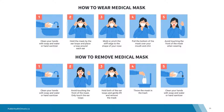How to wear the medical mask: clean your hands with soap and water or hand sanitizer. Hold the mask by the ear loops and place a loop around each ear. Mold or pinch the stiff edge to the shape of your nose. Pull the bottom of the mask over your mouth and chin. Avoid touching the front of the mask when wearing. To remove the medical mask, first clean your hands with soap and water or hand sanitizer. Avoid touching the front of the mask — only touch the ear loops. Hold both of the ear loops and gently lift and remove the mask. Throw the mask in the trash. Clean your hands with soap and water or hand sanitizer.